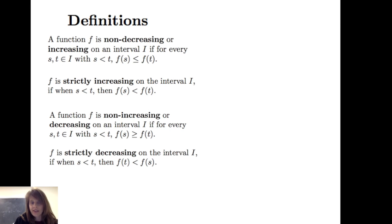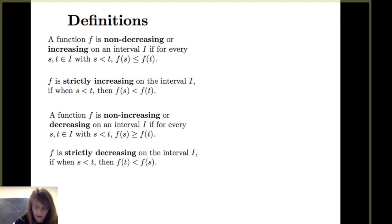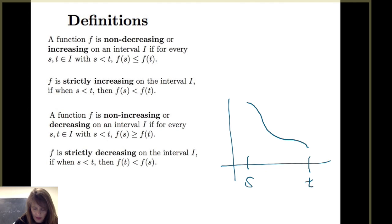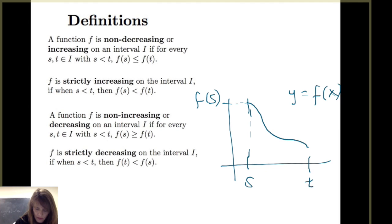Or f is strictly decreasing on interval I if when s is less than t, then f of t is less than f of s. To illustrate this with a graph, here's an example where f of s is greater than or equal to f of t, or equivalently f of t is less than or equal to f of s.